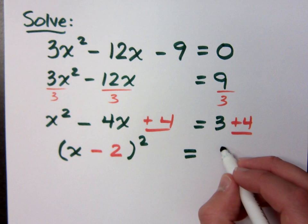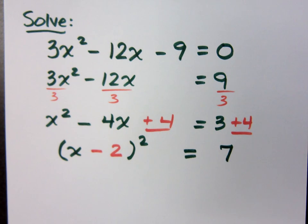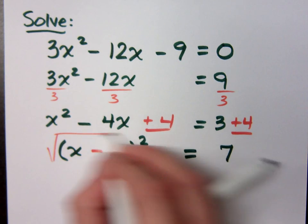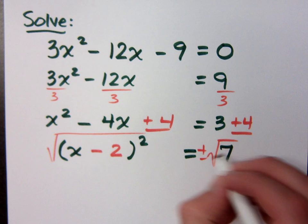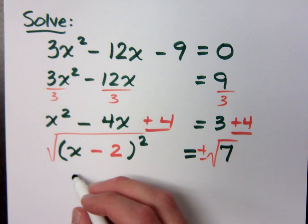So x minus 2 quantity squared equals 7. And then what do you do? Use the square root property? Plus or minus. So what is my result now?